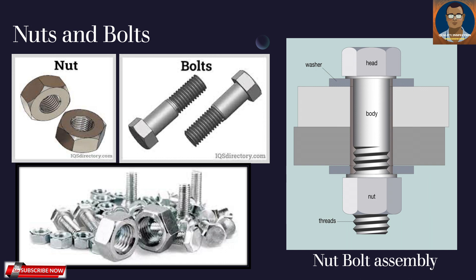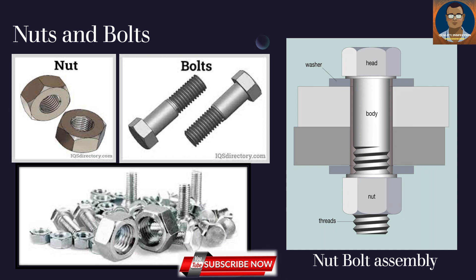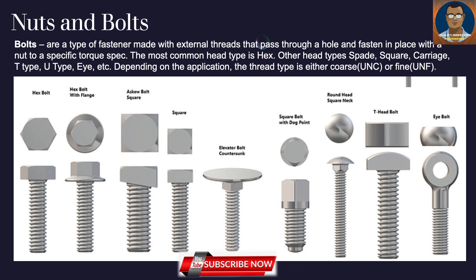Nuts and bolts are a type of fastener made with external threads that pass through a hole and are fastened in place with a nut to a specific torque specification. The most common head type is hexagonal; other head types include spade, square, carriage, T-type, U-type, and others depending on the application. The thread type is either coarse UNC or fine UNF. Bolts always come with matching nuts, whereas screws do not have nuts — this is the basic difference between the two.